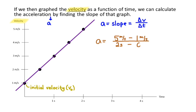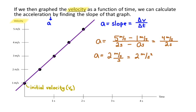To find the slope I'll pick two points: five meters per second at two seconds, and one meter per second at zero seconds. That gives a change in velocity of four meters per second over a time of two seconds, for an acceleration of two meters per second per second — more easily written as two meters per second squared. So the unit for acceleration is typically meters per second squared.